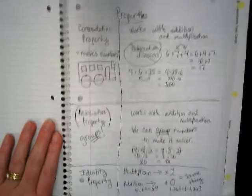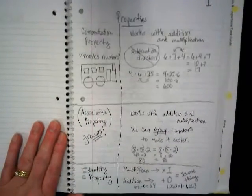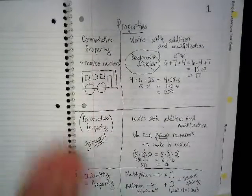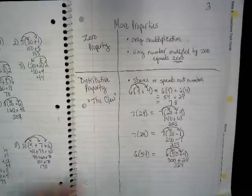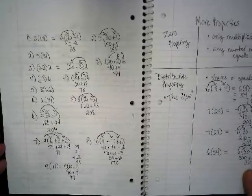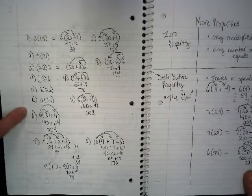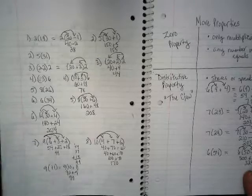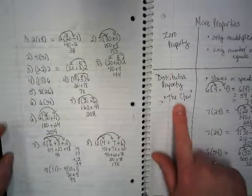And then we have the properties. This is on page one. On page three we have more properties. And on the left side you guys did some independent practice. I wrote down these problems and you completed this showing distributive property using the claw.